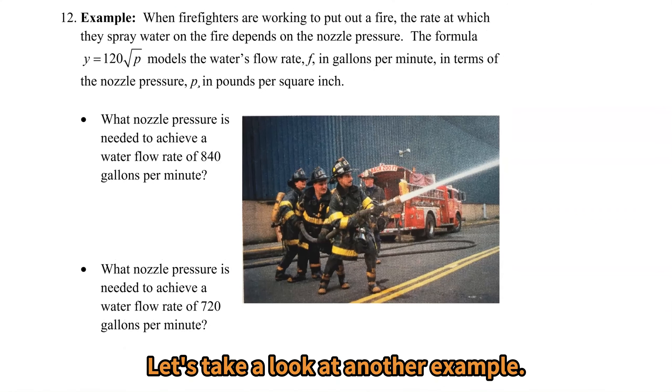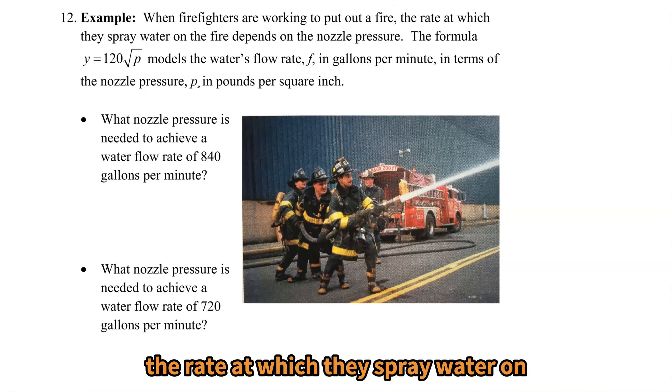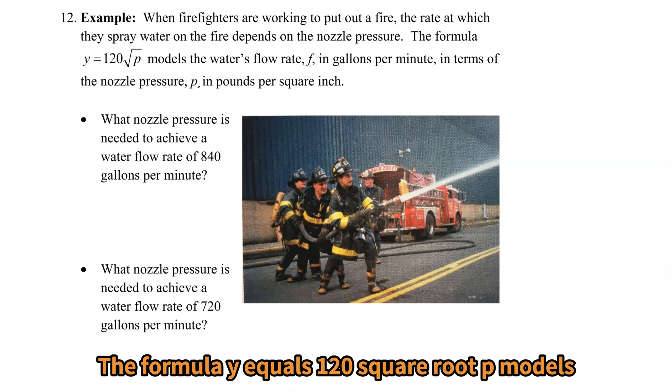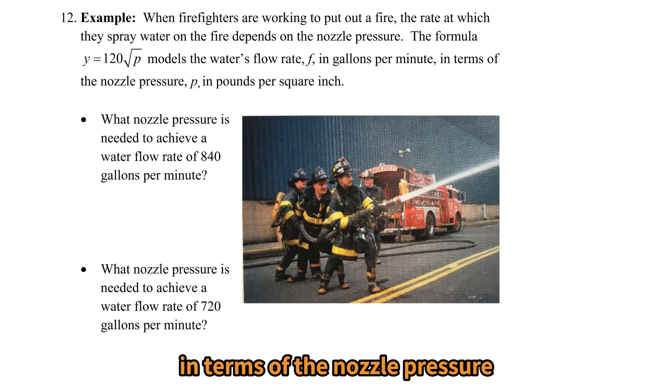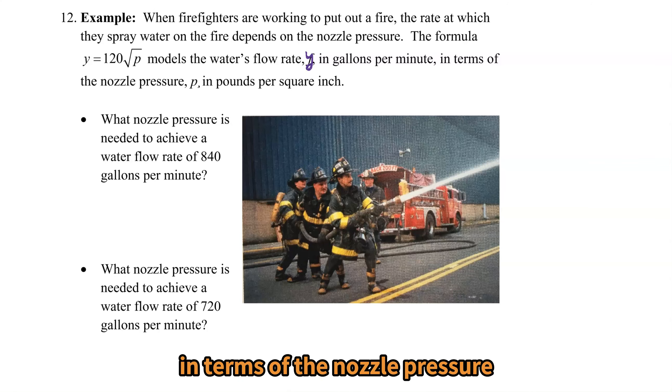Let's take a look at another example. When firefighters are working to put out a fire, the rate at which they spray water on the fire depends on the nozzle pressure. The formula y equals 120 square root p models the water's flow rate y in gallons per minute in terms of the nozzle pressure p in pounds per square inch.